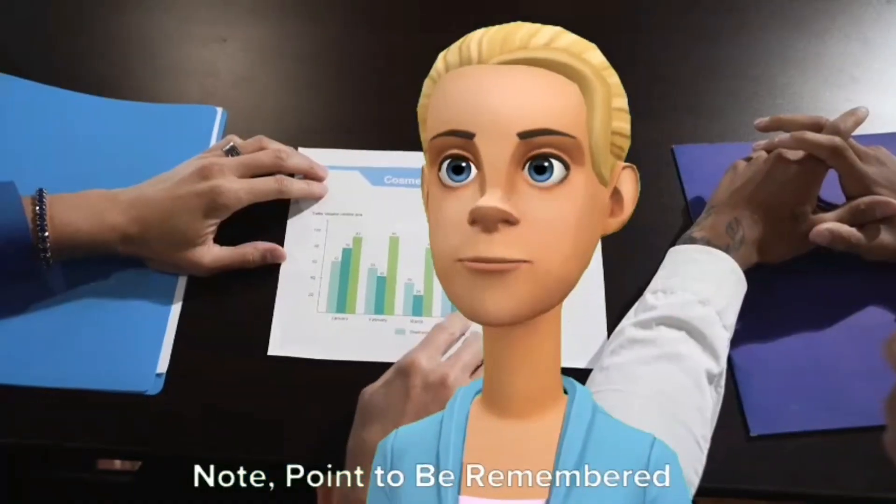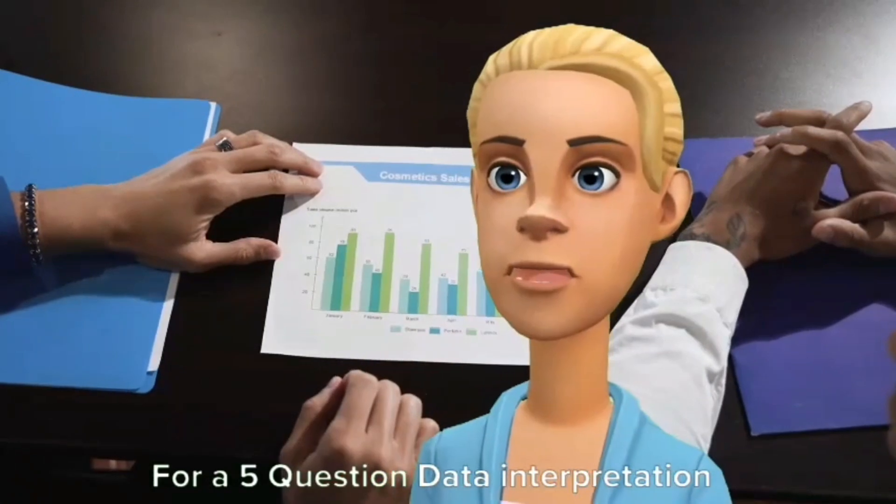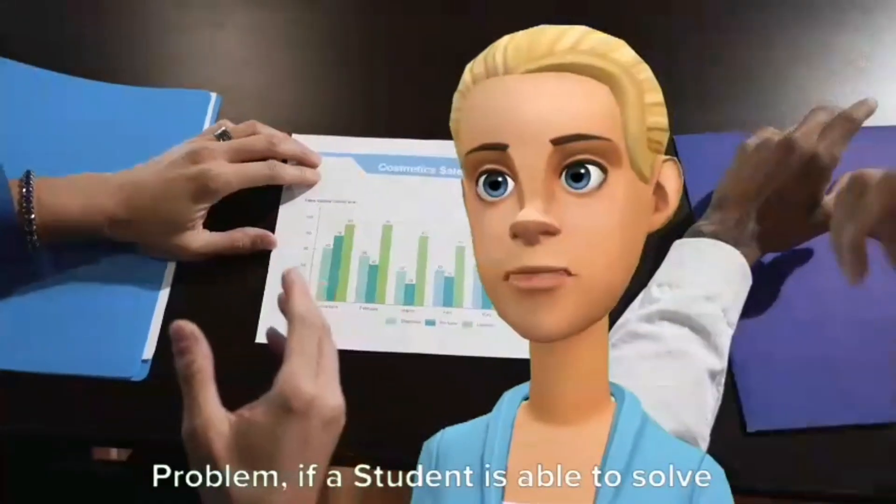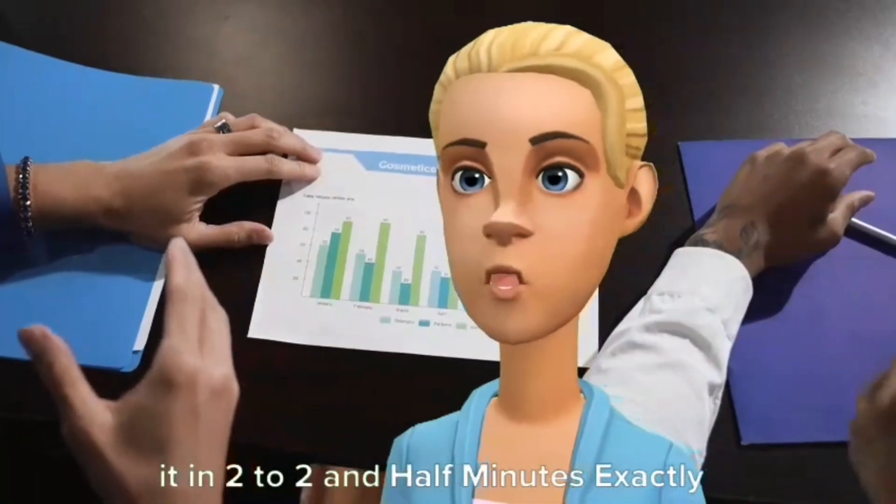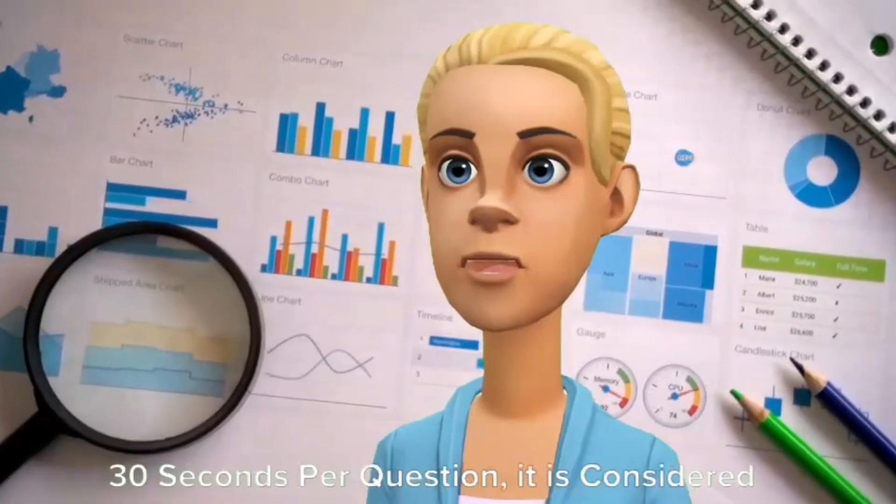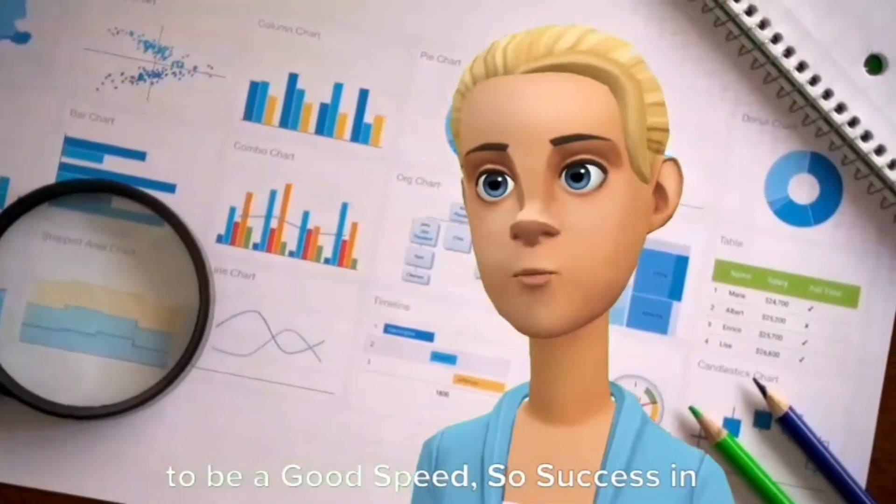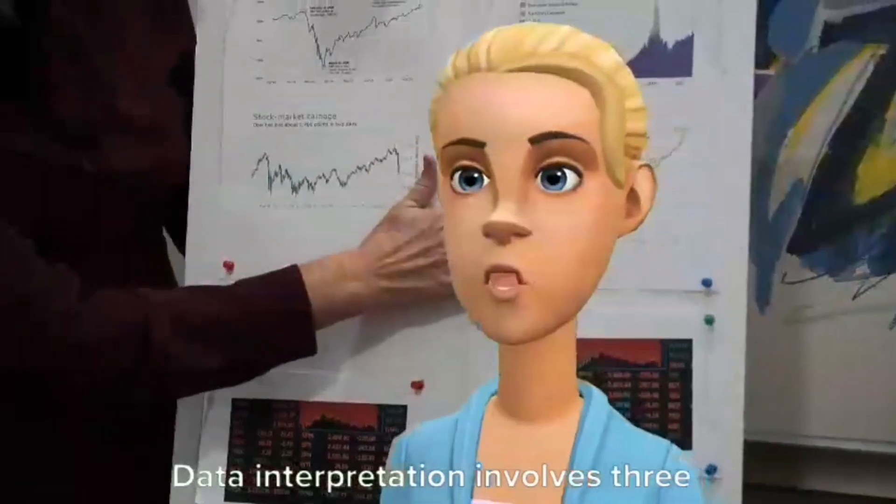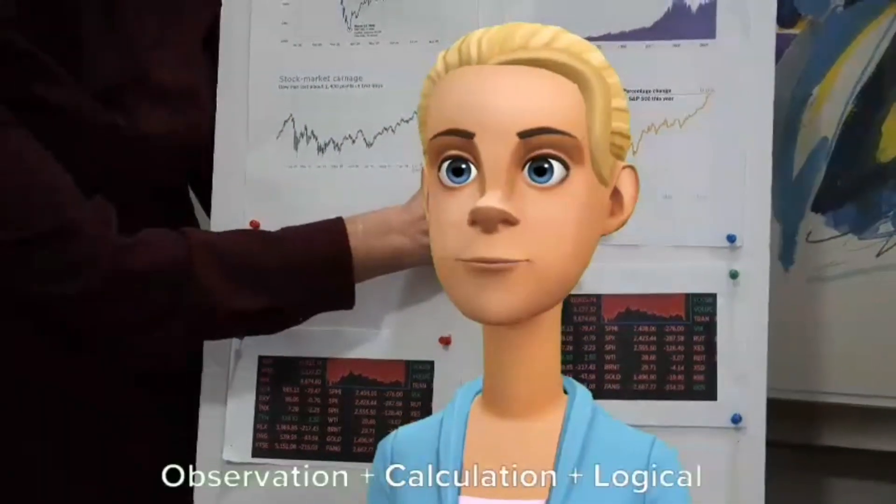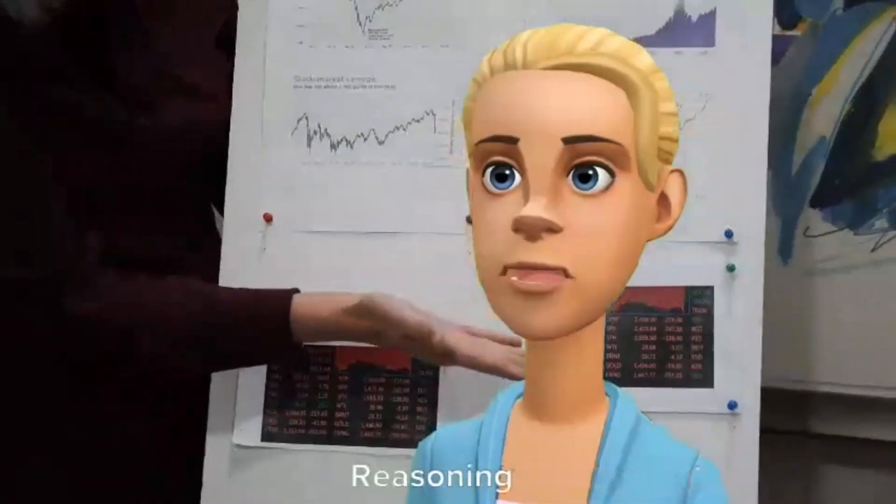Note, point to be remembered. For a five question data interpretation problem, if a student is able to solve it in two to two and a half minutes exactly, 30 seconds per question, it is considered to be a good speed. So success in data interpretation involves three best abilities: observation plus calculation plus logical reasoning.